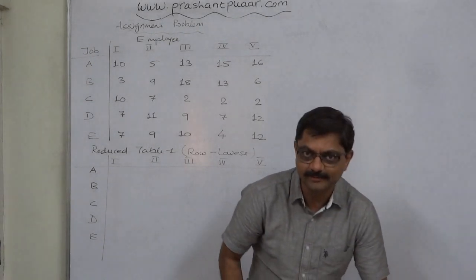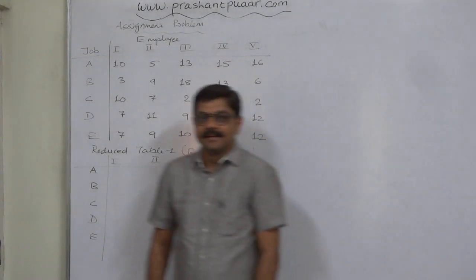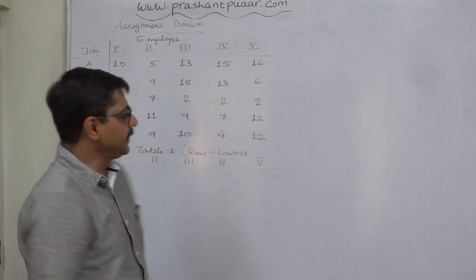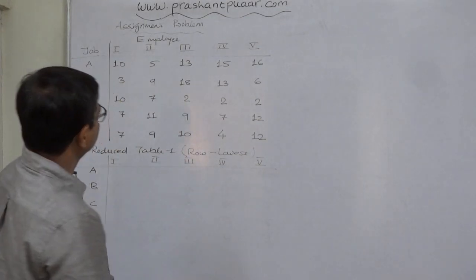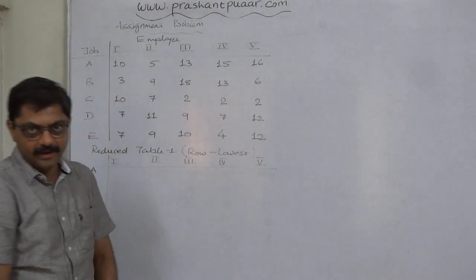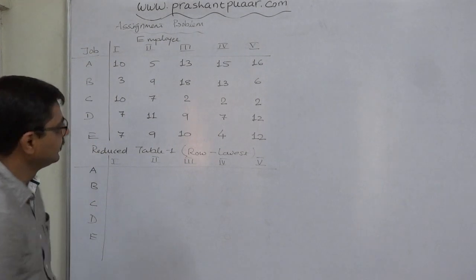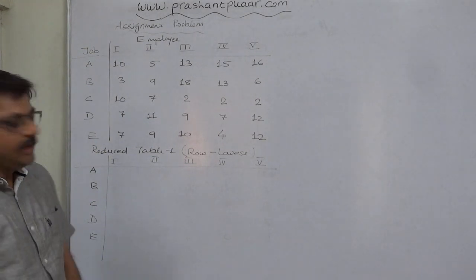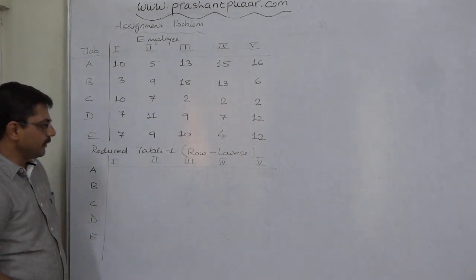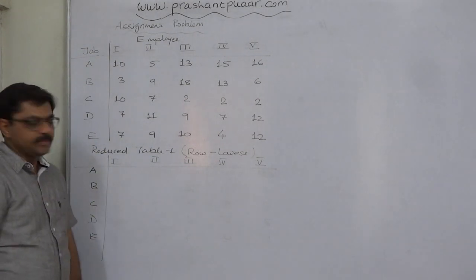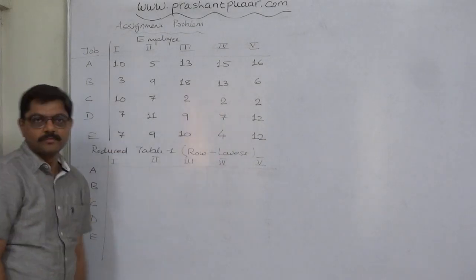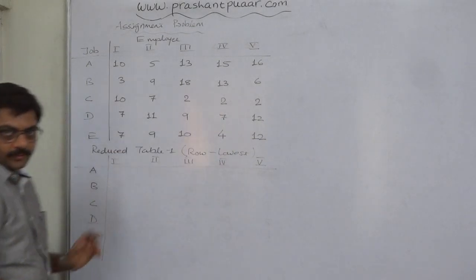Let us take one more case of assignment problem through the Hungarian assignment method. In the Hungarian assignment method, the first step is to subtract the lowest value of each row from the entire row.